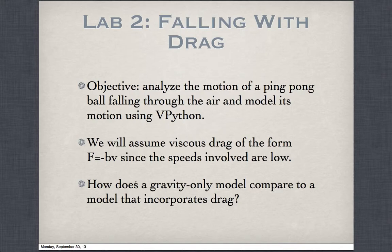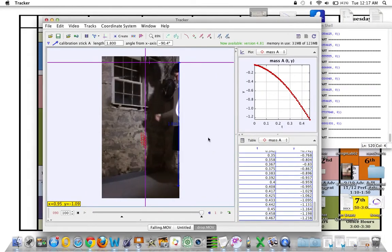A question I wanted to answer was: how does a gravity-only model compare to a model that incorporates drag? Let's look at my observations.